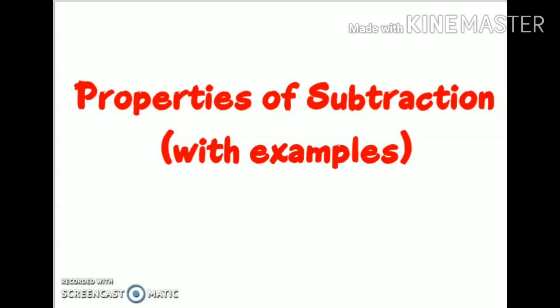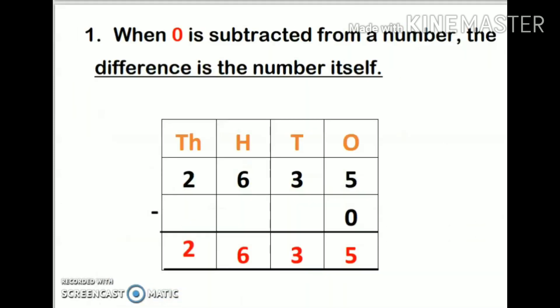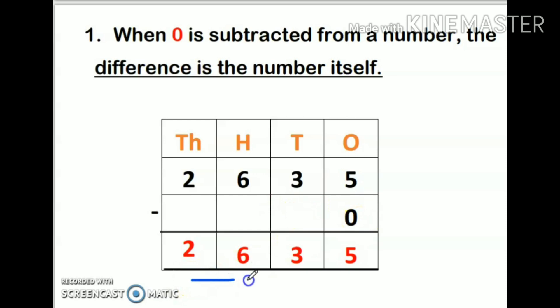Hi everyone, today we are going to discuss properties of subtraction. The first property says that whenever 0 is subtracted from a number, the difference is the number itself. For example, 9 minus 0 will be 9. Here, 2635 minus 0, so my answer is the number itself, that's 2635. This is my first property of subtraction.